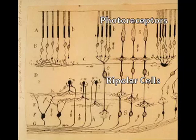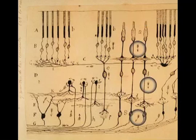then the bipolars, and finally the retinal ganglion cells, each of which has a basally emerging axon.